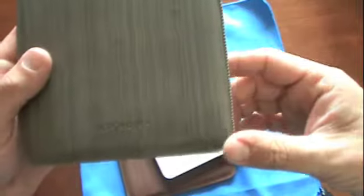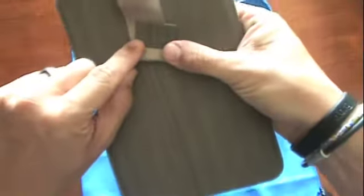And then the outside features this really nice stitching all the way around the edge. You can see the JavoEdge logo down at the bottom. It's also right there on the tab if you can see that.